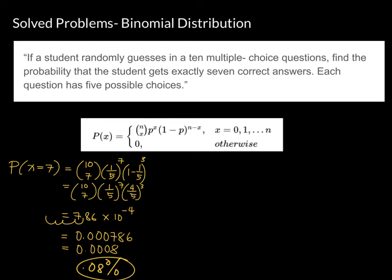So that's how we solve a binomial distribution problem. Remember, the first thing to do is check whether the problem falls under a binomial distribution by verifying the four conditions. Once confirmed, we can proceed to use the formula and find the desired probability.